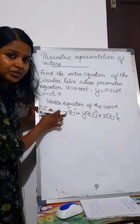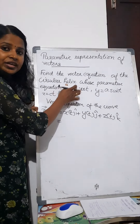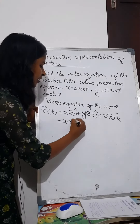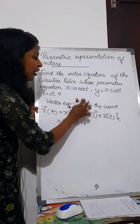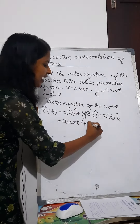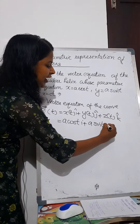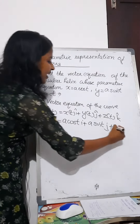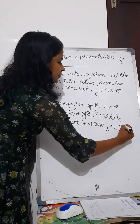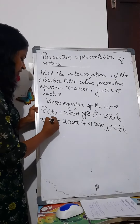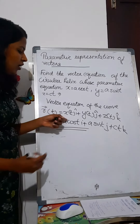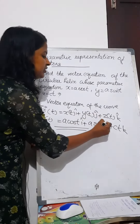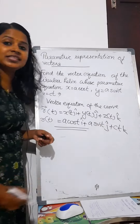What is x of t? Here x in terms of t: x of t is a cos t. So we have a cos t i-cap, plus y of t which is a sin t j-cap, plus c t k-cap. That is, r of t is equal to a cos t i plus a sin t j plus c t k.